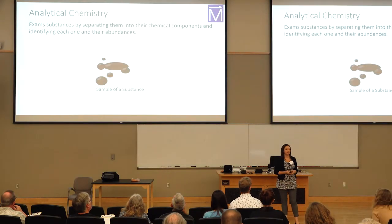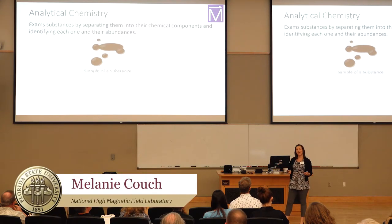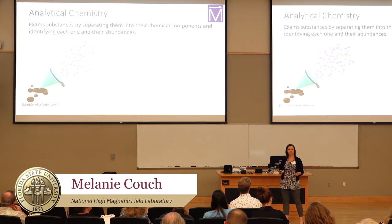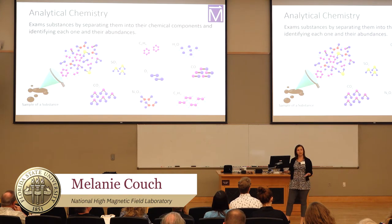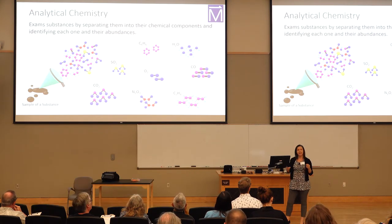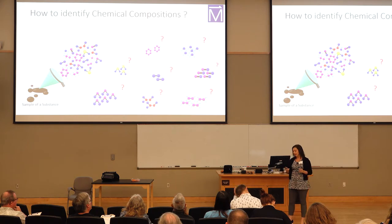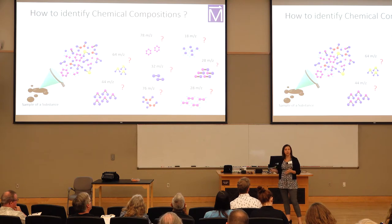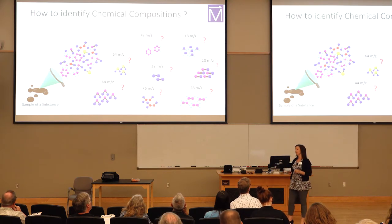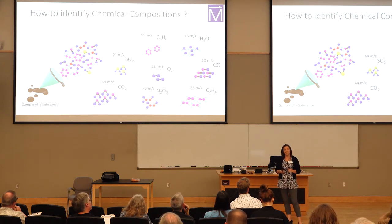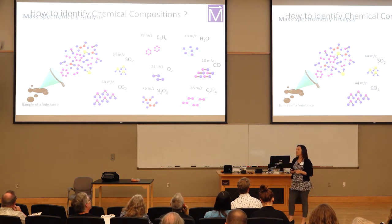In analytical chemistry, our goal is to identify the chemical composition of substances, so we can verify products, understand their properties, and ensure the safety of chemicals, drugs, and food. The most precise technique uses the weight of M over Z — mass to charge — of each chemical component to guess its chemical composition. This technique is well known as mass spectrometry analysis.